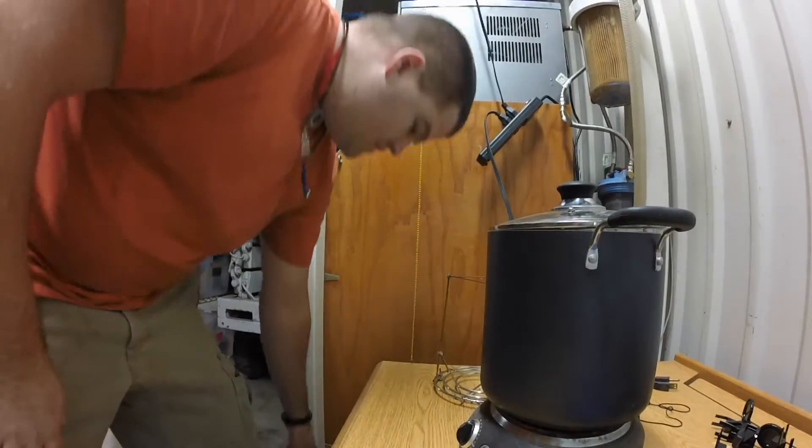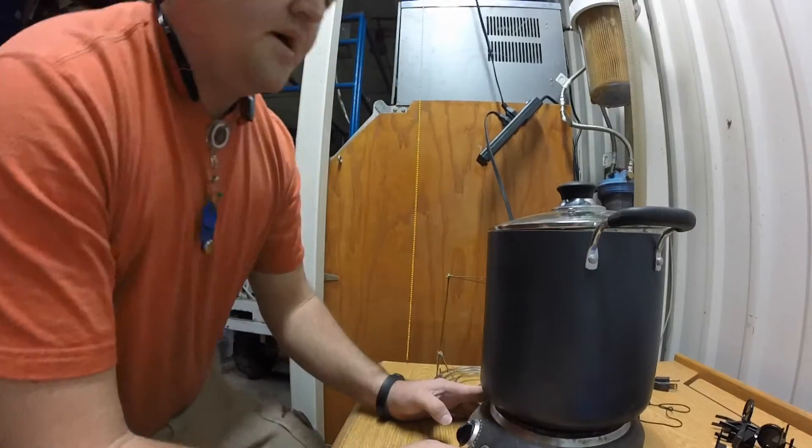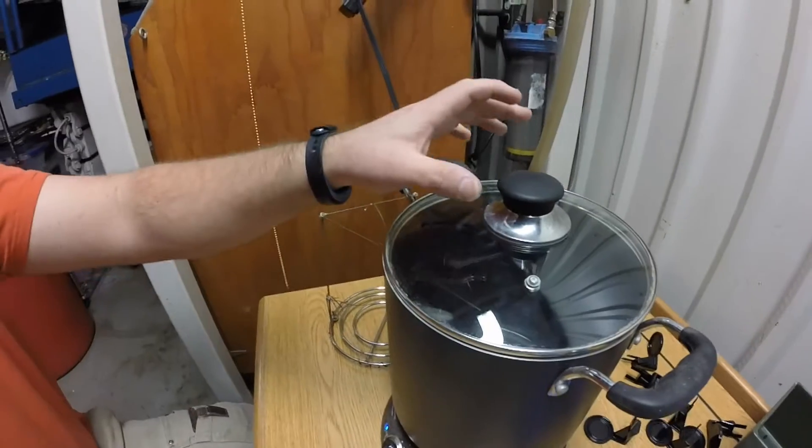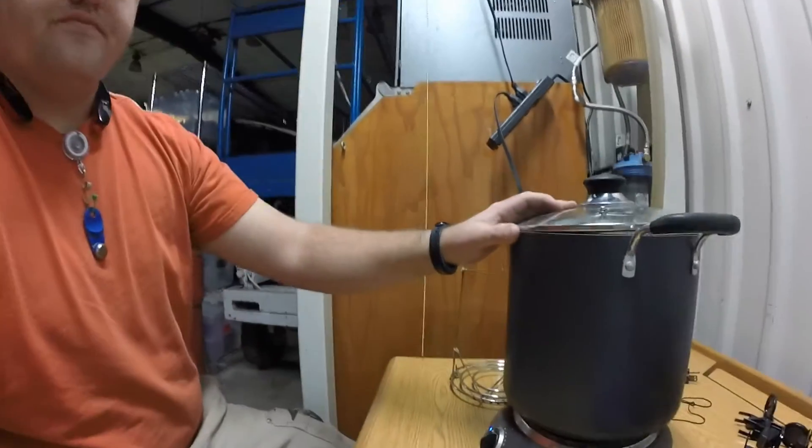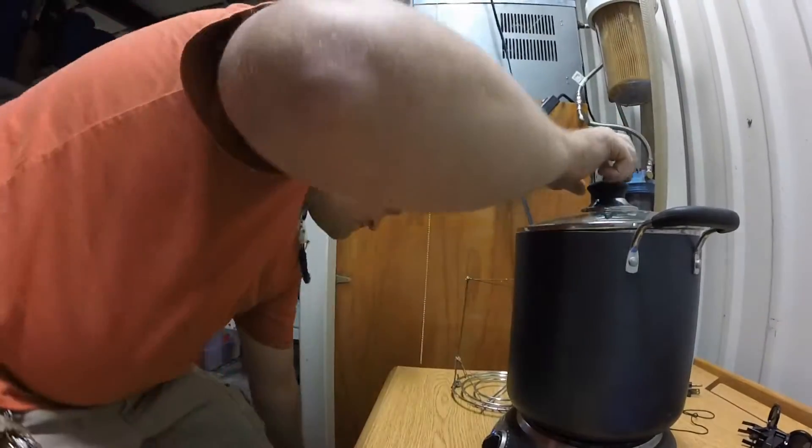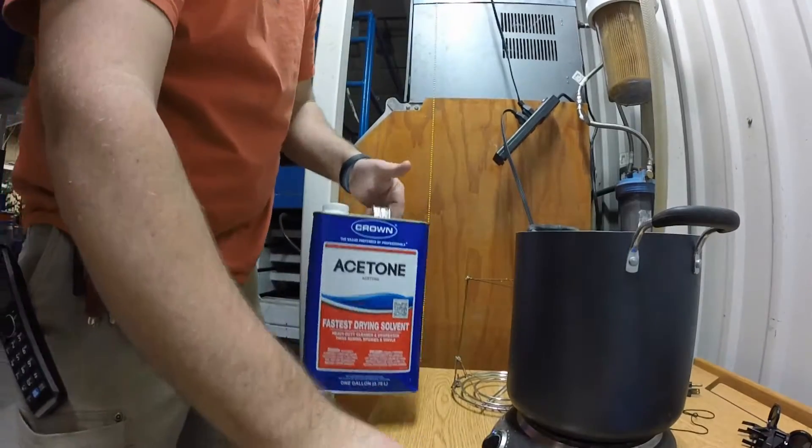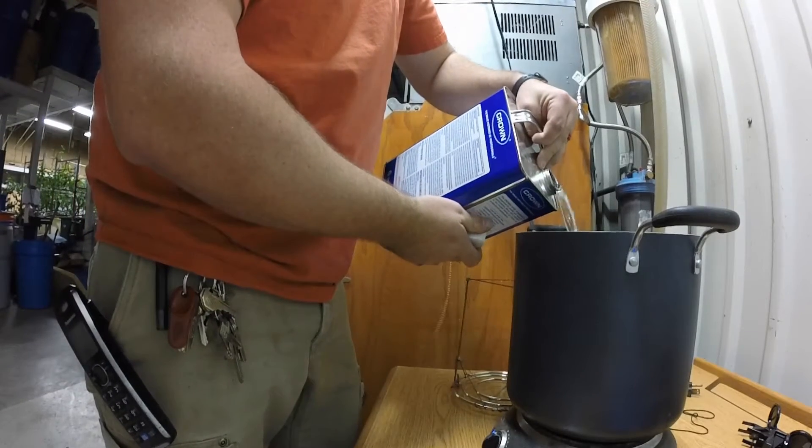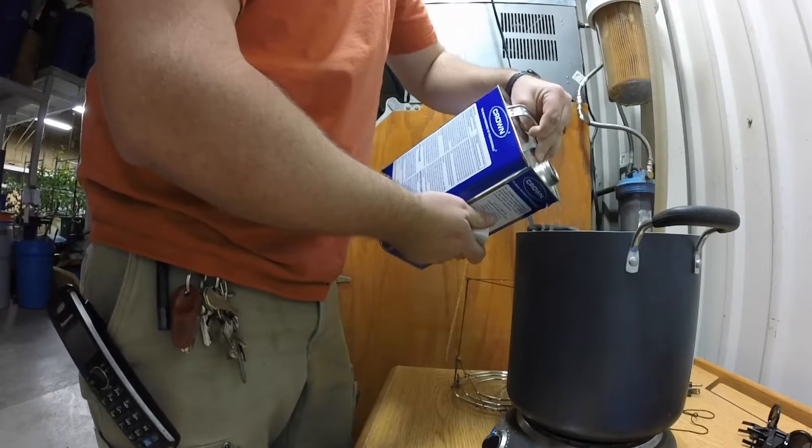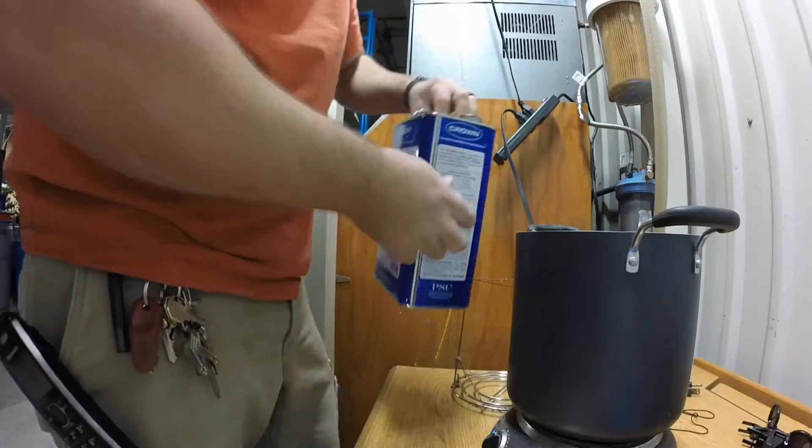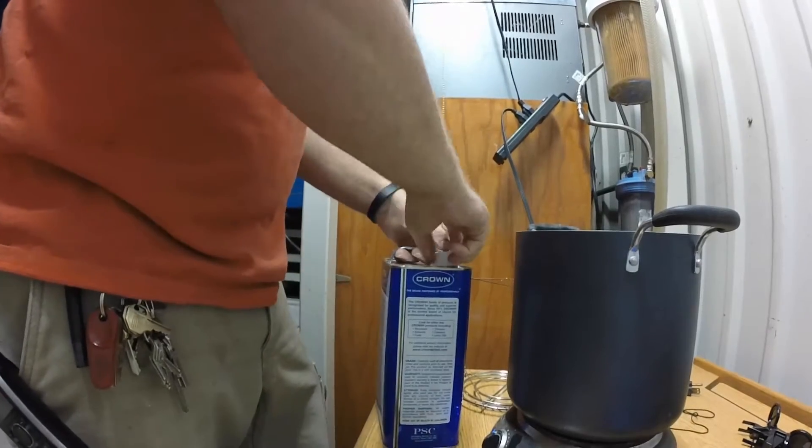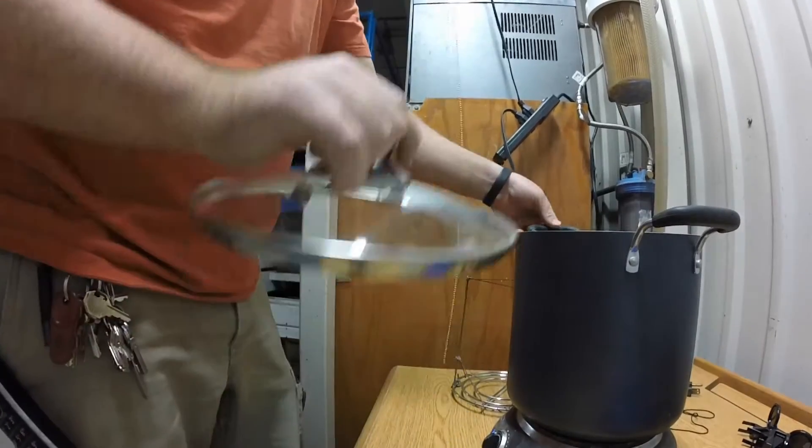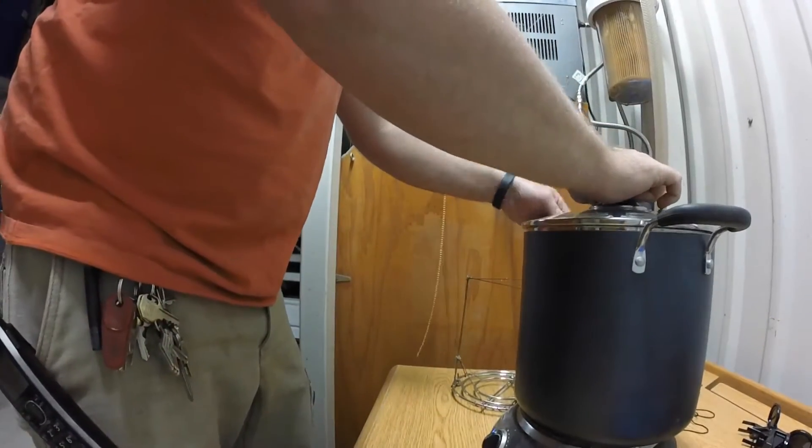So the first thing we're going to do is you're going to need a hot plate and a pot. I prefer one that has a glass lid so I can see everything that's going on in here. Let's get some acetone, pour it in here. I'll try to get about a quarter inch on the bottom of this pot. It seems to work out pretty good.